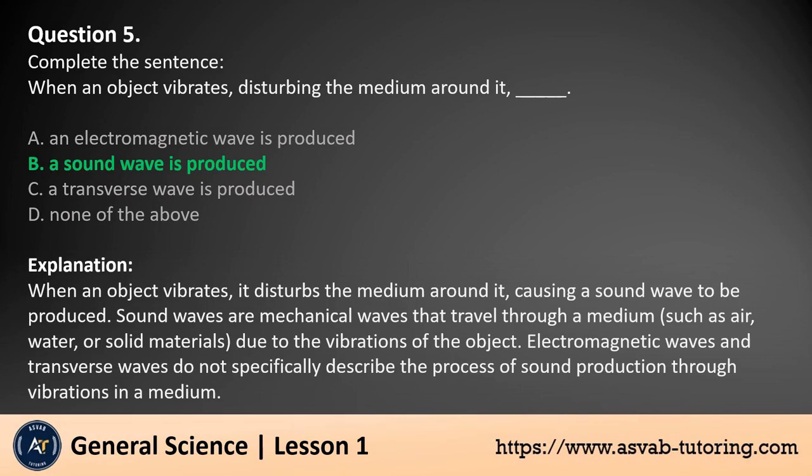The answer is b. When an object vibrates, it disturbs the medium around it, causing a sound wave to be produced. Sound waves are mechanical waves that travel through a medium, such as air, water, or solid materials, due to the vibrations of the object. Electromagnetic waves and transverse waves do not specifically describe the process of sound production through vibrations in a medium.